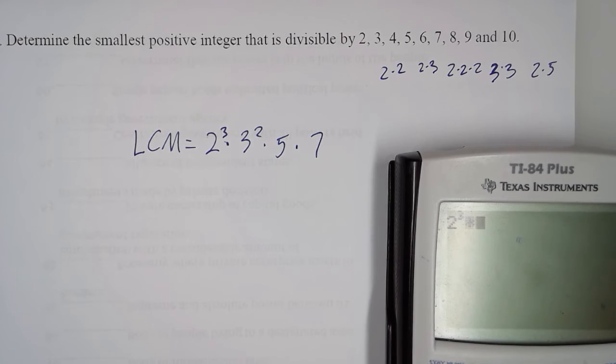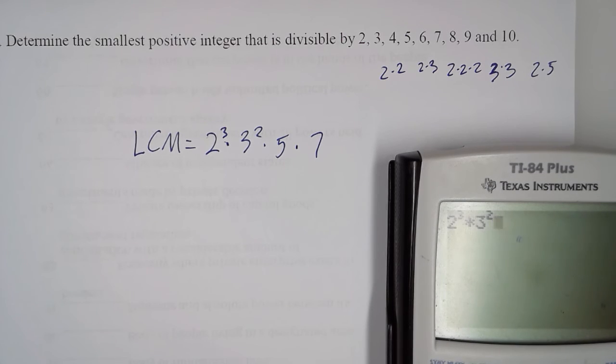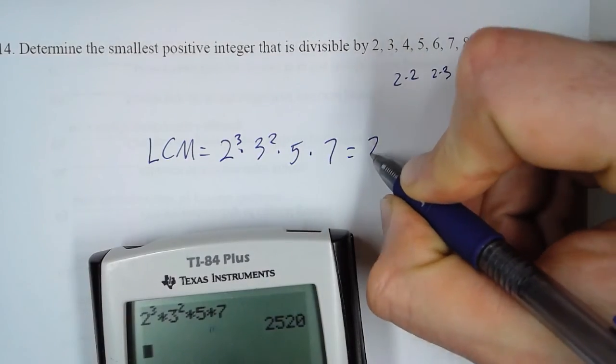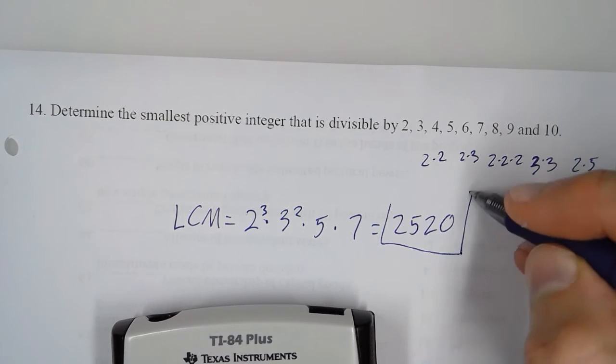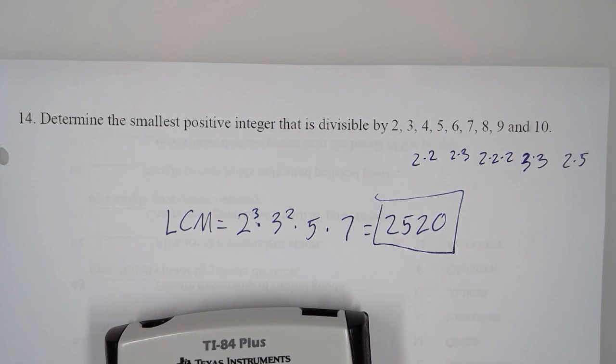2 to the 3rd times 3 squared times 5 times 7. And that least common multiple is 2,520. There's our answer, and we're done.